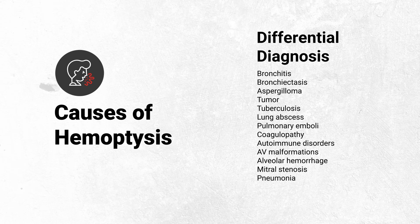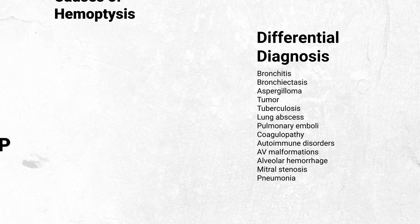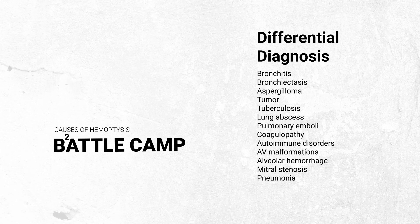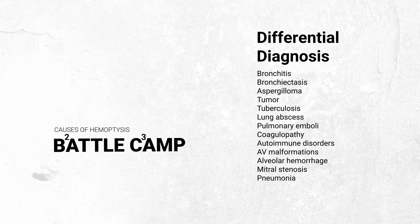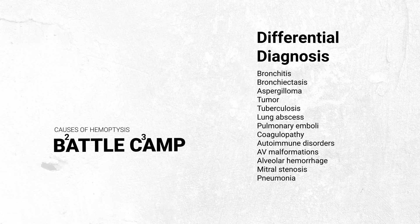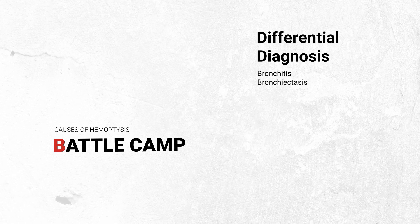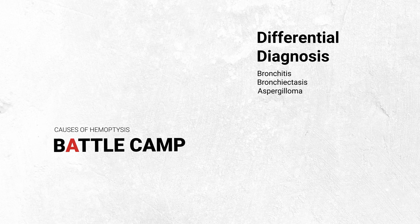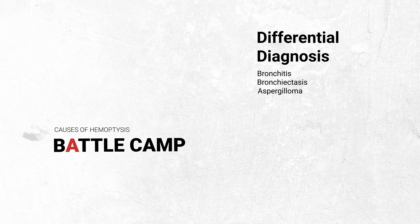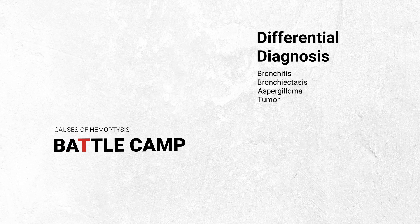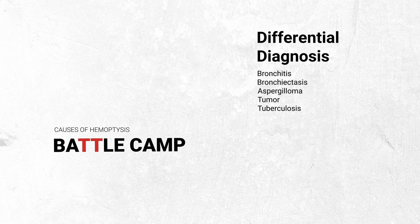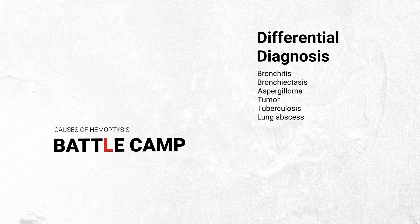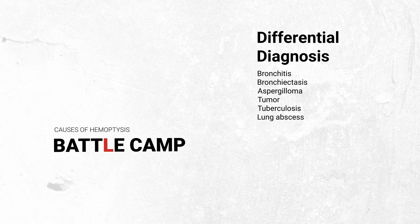To help you remember this list, here is a mnemonic. Just remember there are two B's in BATTLE and three A's in CAMP. B stands for bronchitis and bronchiectasis. A stands for aspergilloma. T stands for tumor. The second T stands for tuberculosis. L stands for lung abscess.